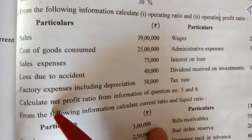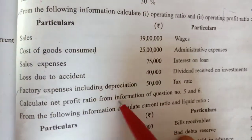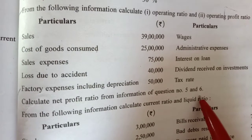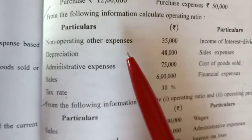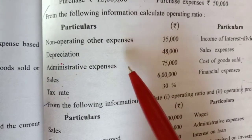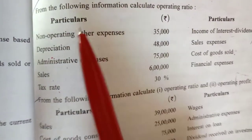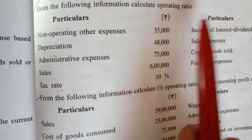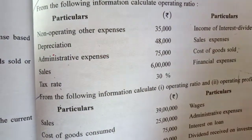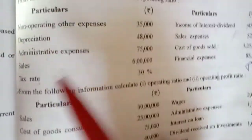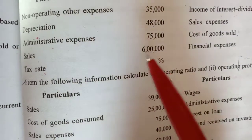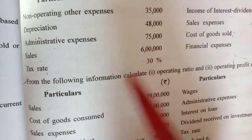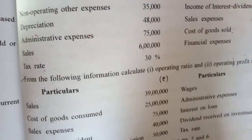Question number 7: Calculate net profit ratio from the information of questions 5 and 6. From question number 5, we will calculate net profit. The formula is: sales plus any other non-operating income, minus all the expenses.